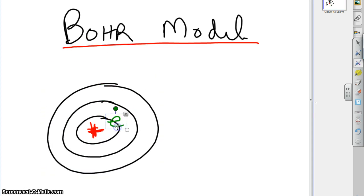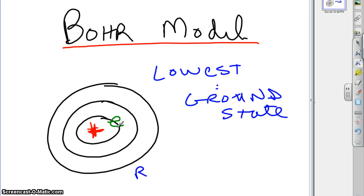There's names for these different states. The lowest is called the ground state. So we have these energy levels, or the rings, and the farther you go out, the bigger, the more energy.